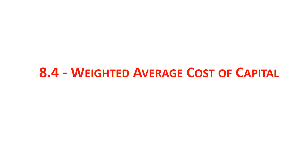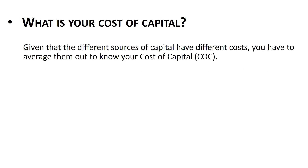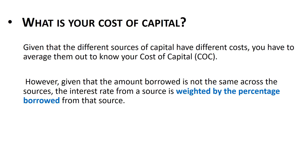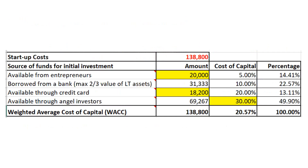Weighted average cost of capital. Given that different sources of capital have different costs, you must average them out to know your overall cost of capital. However, since the amount borrowed is not the same across sources, the interest rate from each source is weighted by the percentage borrowed from that source — this is called the weighted average cost of capital.